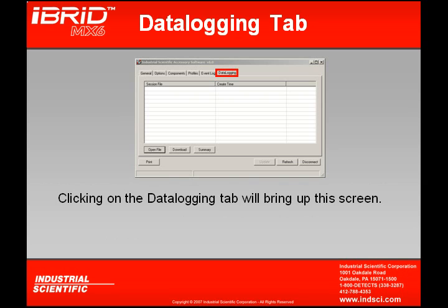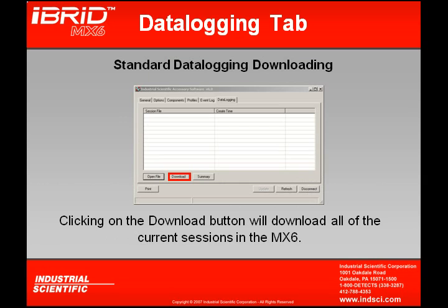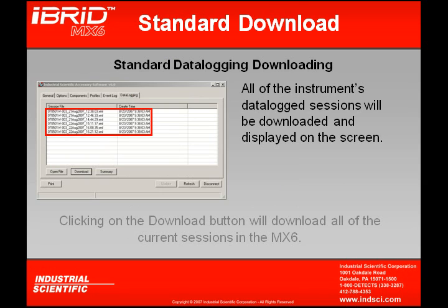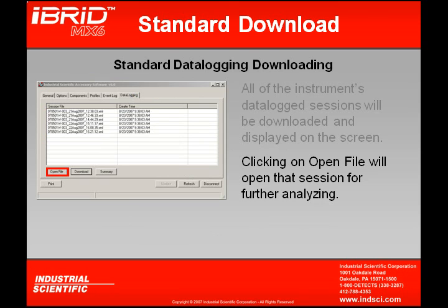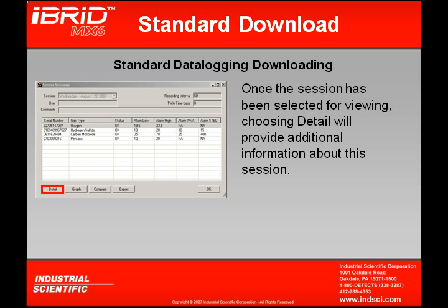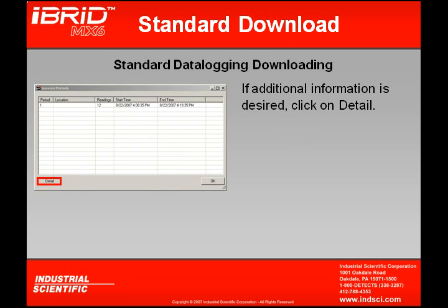My last tab is my Data Logging tab. By clicking my Data Logging tab, this screen will appear. If I have standard data logging enabled in my MX-6, downloading the information from within the data logger is simply done by clicking the Download button. This will download all the sessions onto my display for viewing. At this point, I can highlight a session of interest and click Open File. All the detail of the sensors and gas readings will be displayed. If I wish to view one particular sensor reading, I highlight that sensor and click Detail. Now I can drill down further — you'll notice there are 12 different readings available for this sensor. By highlighting and clicking Detail, I'll gather the information on those 12 readings.